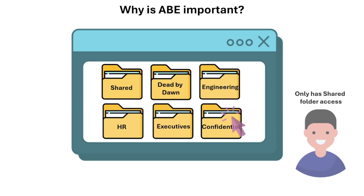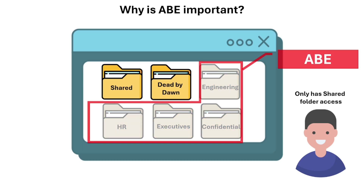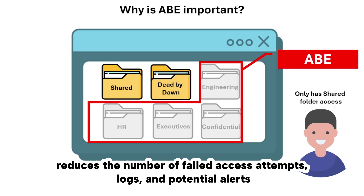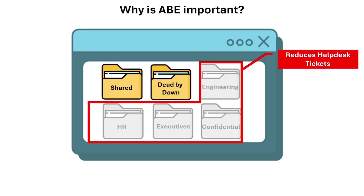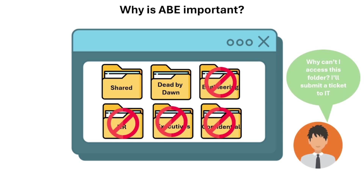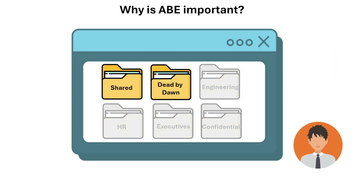Another reason is it limits unnecessary access attempts. Users often click on folders they see out of curiosity even if they don't have access. ABE prevents these clicks entirely by removing temptation, reducing the number of failed access attempts, logs, and potential alerts. It also reduces helpdesk tickets — when users see folders they can't open they might assume something's broken, but with ABE they only see what they have permission to use.